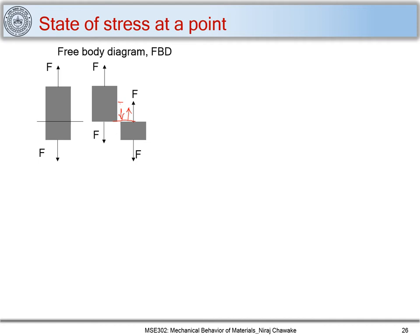Now let's understand the state of stress at a point. I assume a very small element here with area delta A. The force acting on this element reduces proportionally to delta F. Since the stress is constant, I define the stress at this element as sigma = delta F upon delta A.